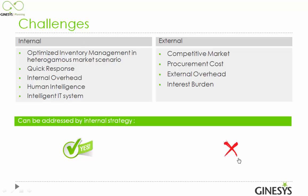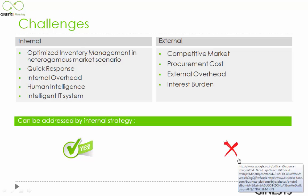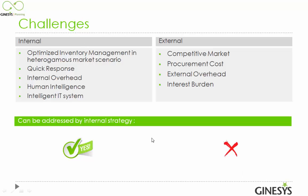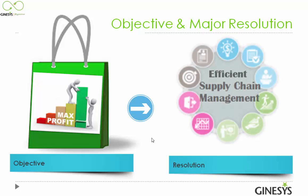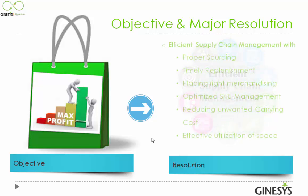What is the actual objective for this retail industry? It is basically profit maximization. But what would be the resolution for this maximization of profit? That would be efficient supply chain management — achieved through proper sourcing and timely replenishment.